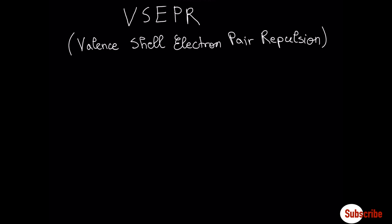VSEPR is intended to show the three-dimensional shape of the molecule. As for nomenclature, A is going to be the central atom, B is going to be the bonding atom around the central atom, and E is going to be the lone pair around the central atom. I will use steric number to predict geometries. Steric number is equal to number of sigma bonds plus number of lone pairs around the central atom. This means that double bond and triple bond can be treated like a single bond.